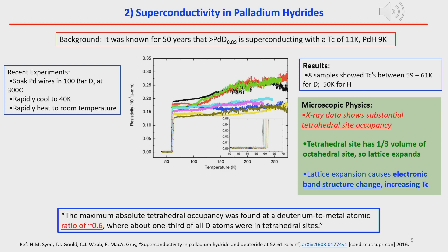The second experiment is superconductivity in palladium hydride. It was known for 50 years that palladium deuteride is superconducting with a TC of 11K and palladium hydride at 9K. Recent experiments soaked palladium wires in 100 bar of D2 at 300°C, rapidly cooled to 40K, then heated to room temperature. The results show transition temperatures of about 60K for deuterium and 50K for hydrogen. The X-ray data showed substantial tetrahedral site occupancy; the tetrahedral site is one-third the volume of the octahedral site, so the lattice expands, causing an electronic band structure change that increases TC. The maximum absolute tetrahedral occupancy was found at a deuterium-to-metal atomic ratio of 0.6, where about one-third of all D atoms were in tetrahedral sites.